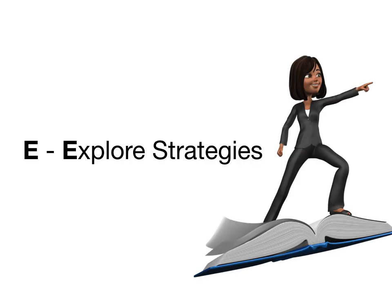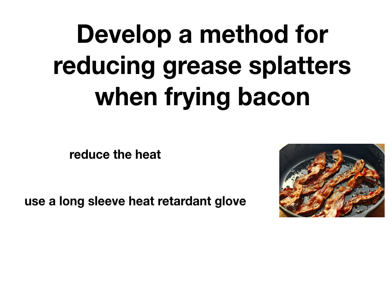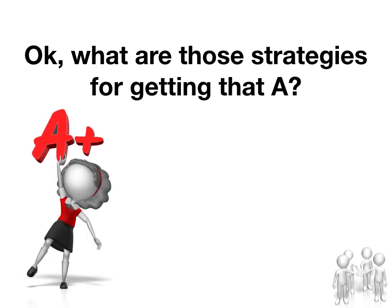After developing goals, it's time to Explore Strategies — what strategies can we employ to achieve our goals and get to a solution? For the bacon grease example, we know we want to reduce the heat and use a long-sleeve heat-retardant glove. To reduce heat, we could move the pan away from the heat source — since in some cases, such as over an open flame, you cannot change the source — or we could literally turn the heat down on the stove. For the glove strategy, we could use a glove that extends up the arm to reduce splatters. Tomorrow in class, think about strategies to help you attain an A in your math class.